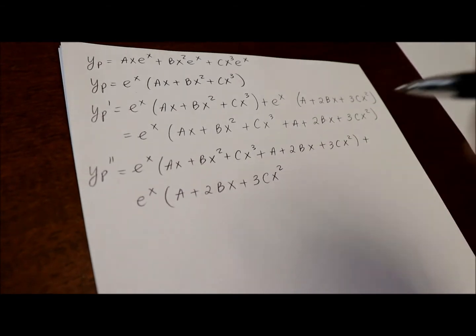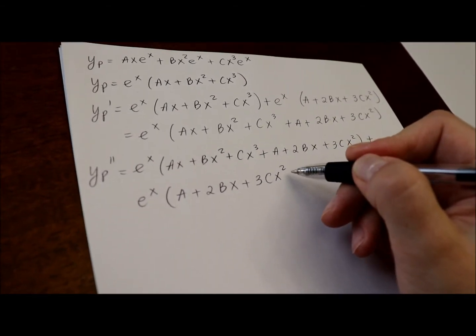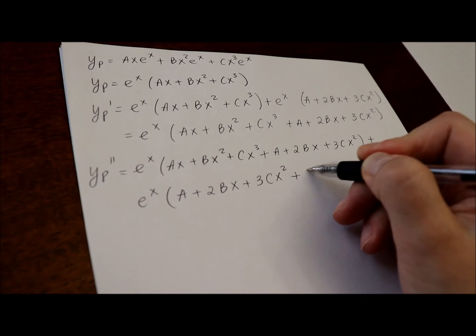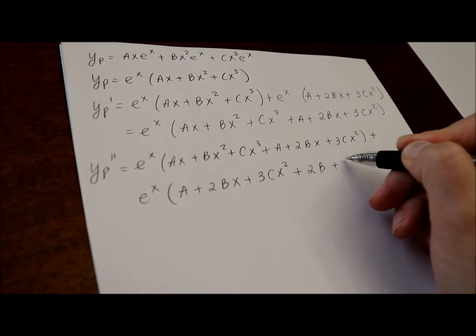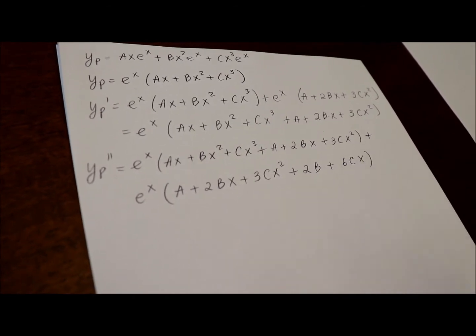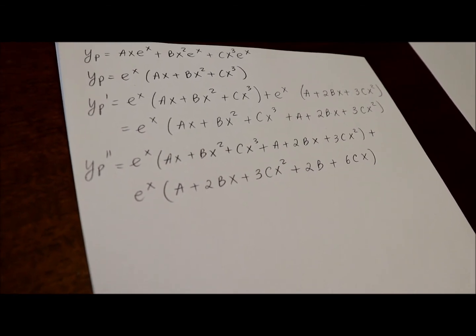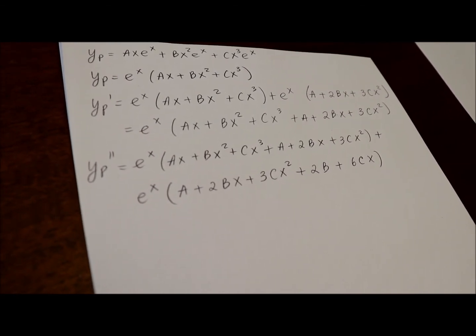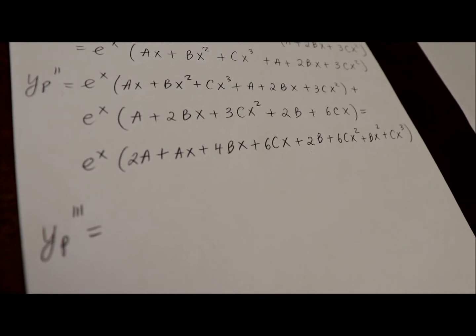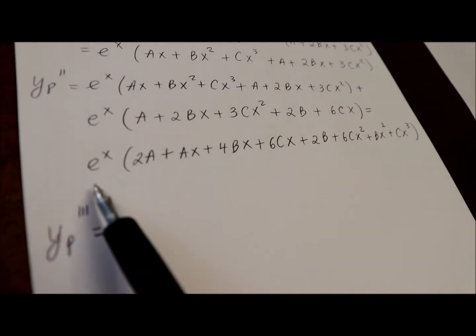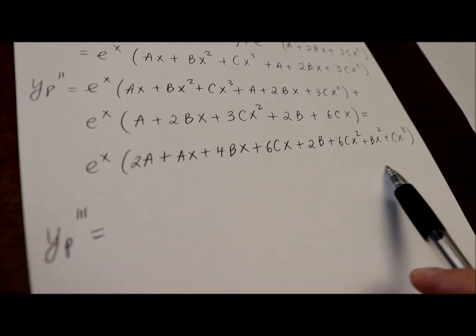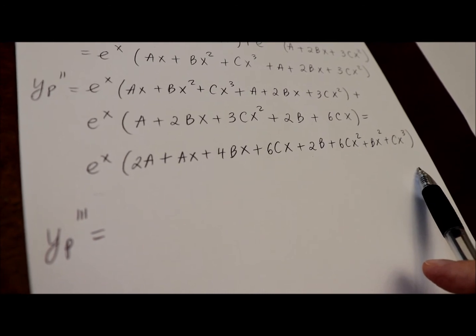Don't forget, derivative of a with respect to x will be 0 since a is a constant. Now, let me combine like terms and factor out e to the x. Alright, after combining like terms, I'm getting this long expression and we still need the third derivative.